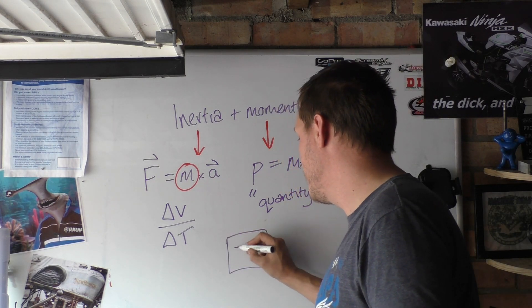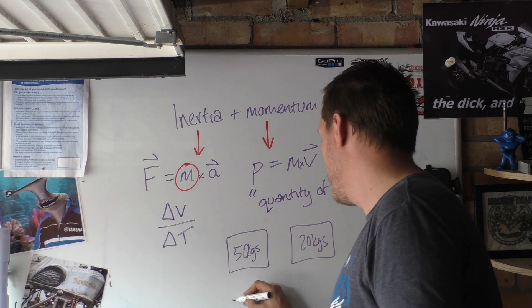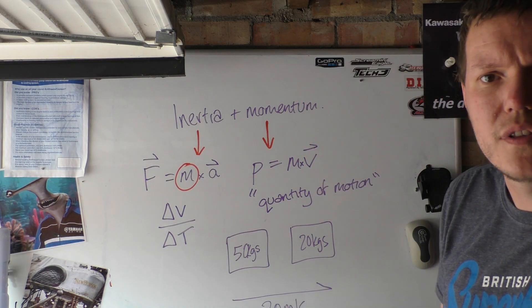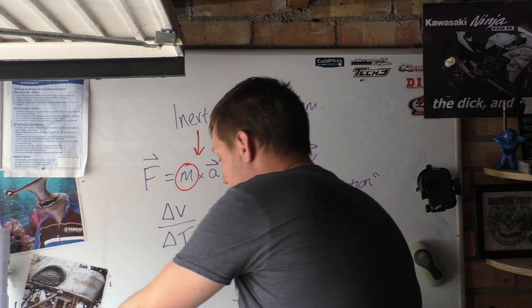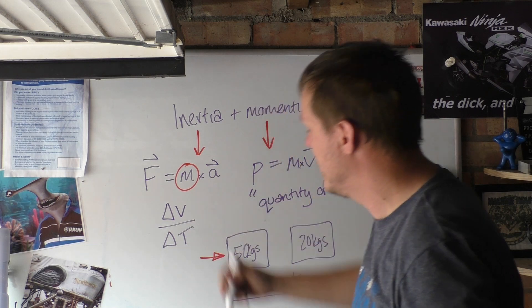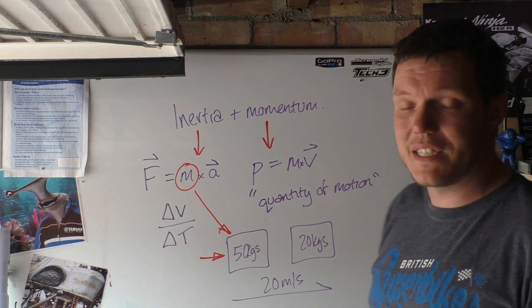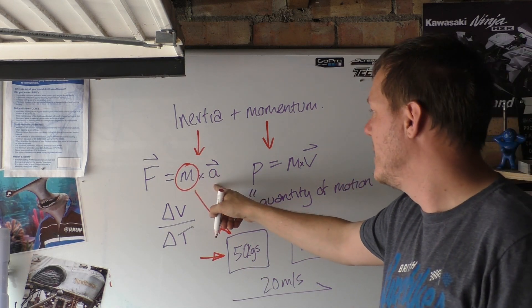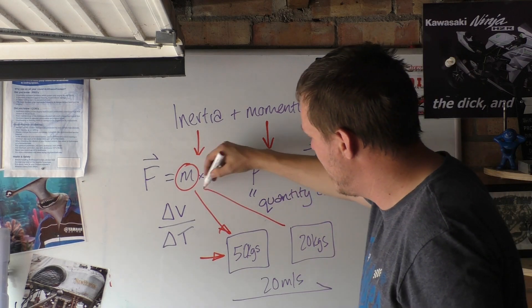So let's just take two things for example. Let's just say we have a block here that weighs 50 kilograms, and we have another block here that weighs 20 kilograms. And we are moving them along at 20 meters per second. So what this means is, if we look at the equations above, our mass is higher for this one than it is this one. So we are going to need a lot more force here to accelerate this up to 20 meters per second. That's our inertia bit, because it's heavily dependent on mass and the acceleration. This one has less than half the mass of this, so the force required is going to be less.